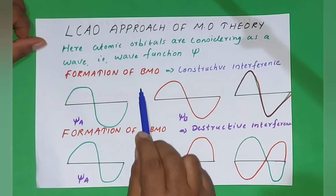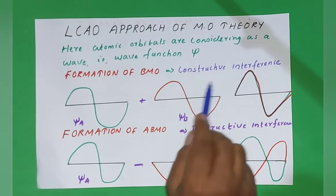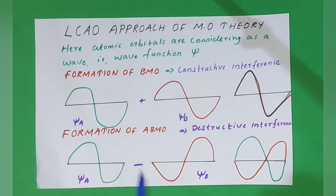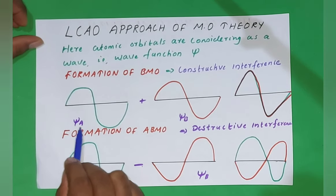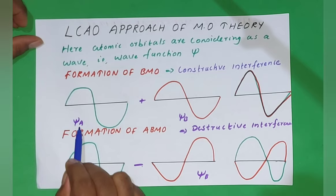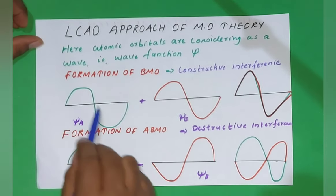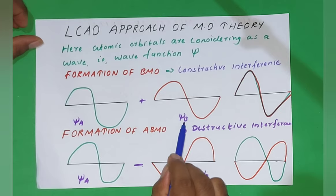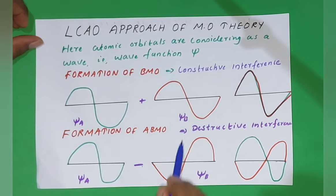Now we can discuss how a bonding molecular orbital (BMO) is formed. A BMO is formed by the constructive interference of atomic orbitals. Here, ψA is the atomic orbital of the first hydrogen atom (HA), represented as a wave having a crest and a trough. And ψB is the atomic orbital of the second hydrogen atom (HB), also represented as a wave.